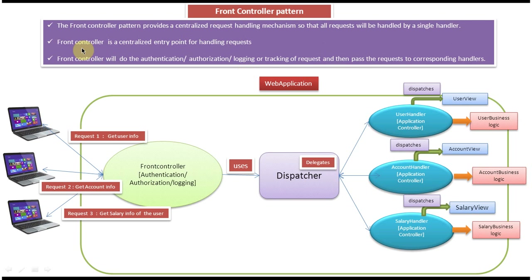The second explanation is the Front Controller is a centralized entry point for handling requests. The third and final explanation is the Front Controller will do the authentication, authorization, logging, or tracking of the request, and then pass the request to the corresponding handlers.